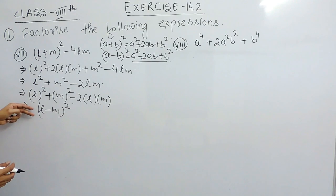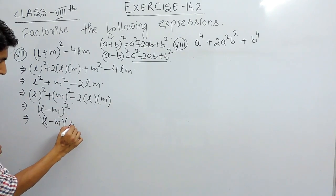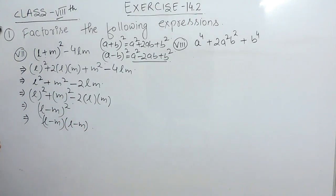So instead of this, this can be written. Now, l minus m whole square is actually meaning l minus m into l minus m. So this is how you can solve the first part.